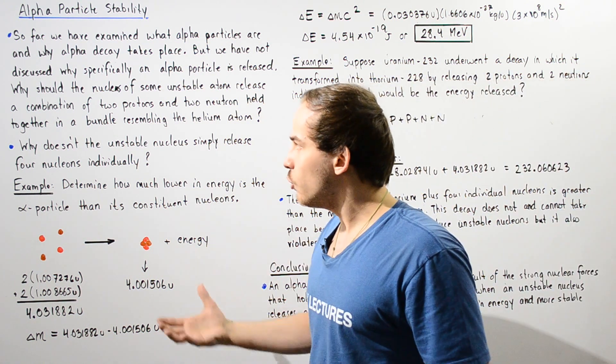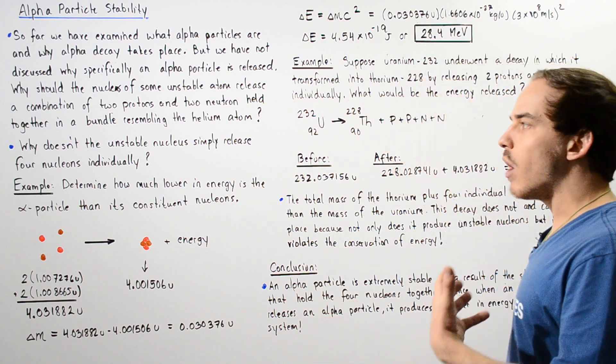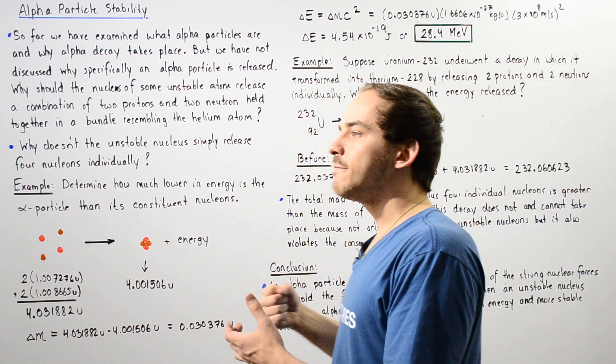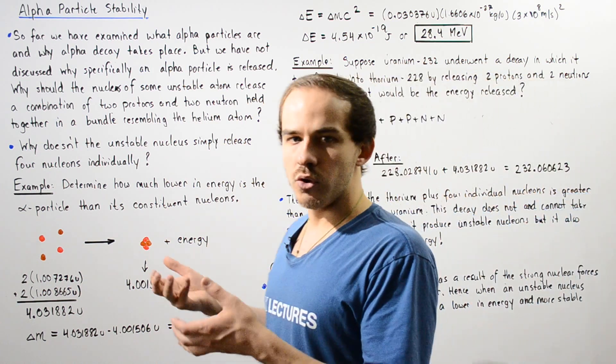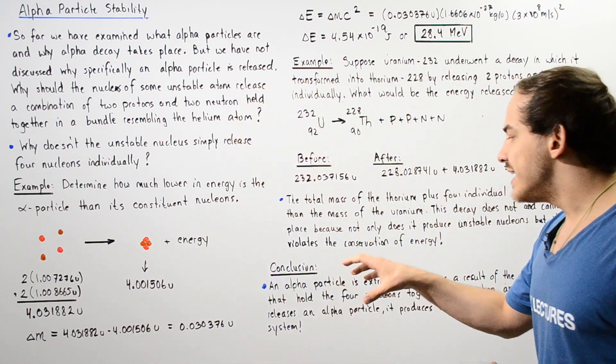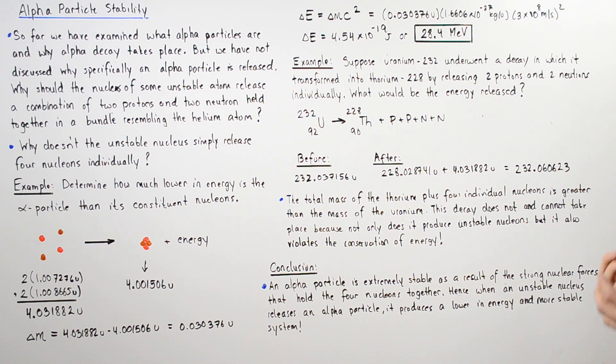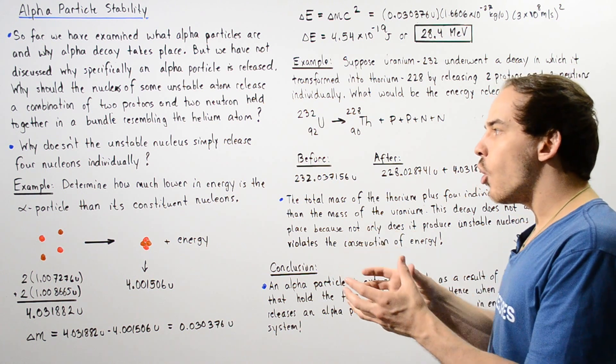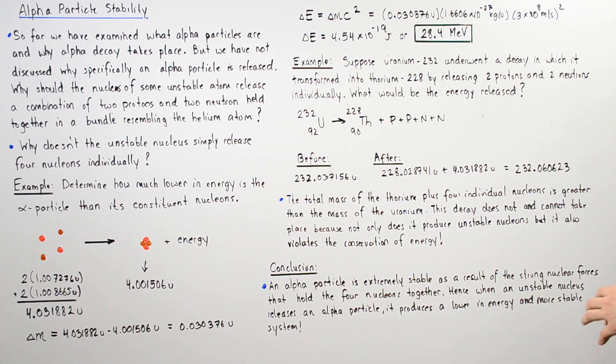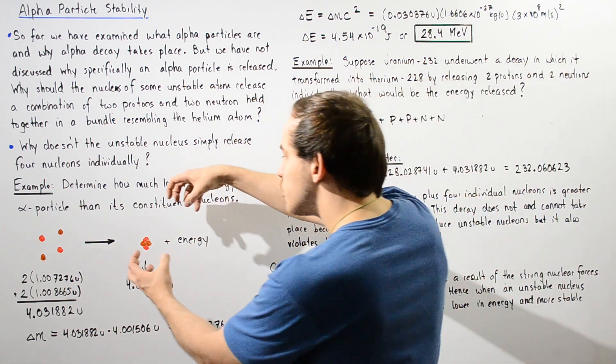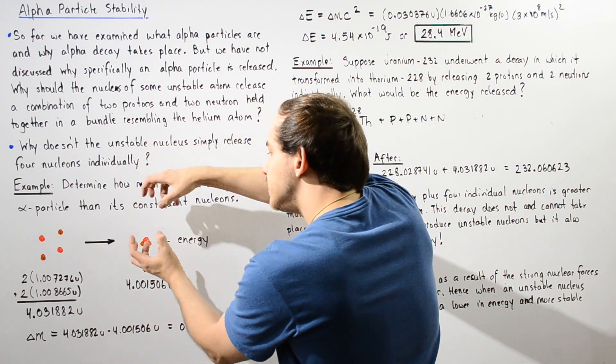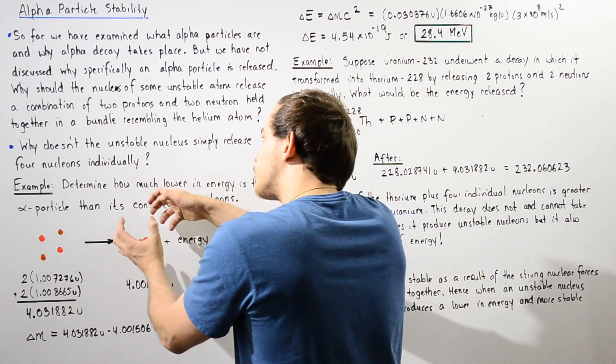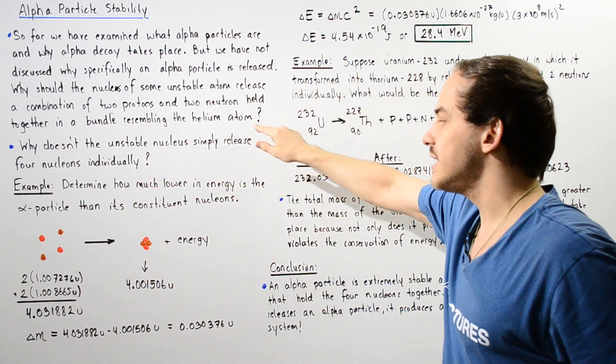So, what exactly can we conclude about our discussion? Why exactly is the alpha particle actually released instead of these four individual nucleons? So, an alpha particle is extremely stable as a result of the strong nuclear forces that hold our four nucleons together. And these strong nuclear forces basically make these four nucleons bundle up in this concentrated region that resembles the helium atom.